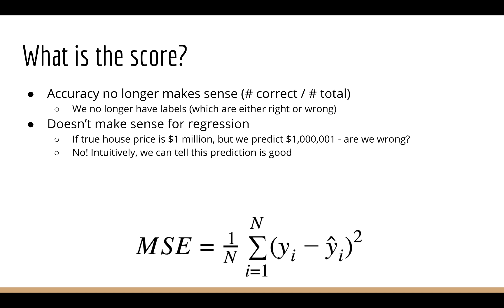Suppose the price of a house is one million dollars, and we predict one million dollars and one dollar. Does that mean we're wrong? No, in fact, intuitively, we know that this prediction is pretty good. But what if the price of a house is one million dollars, and we predict two million dollars? Intuitively, we can tell that this prediction is pretty bad.